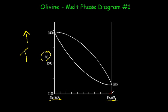At the same time that the iron component is increasing in the olivine or the liquid, the magnesium component is decreasing. So this is a compositional axis.